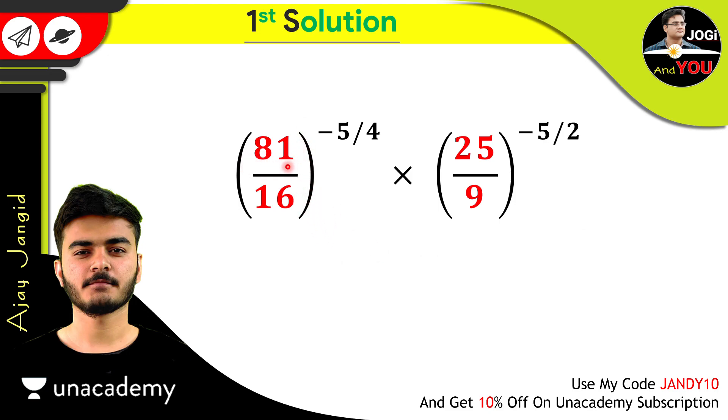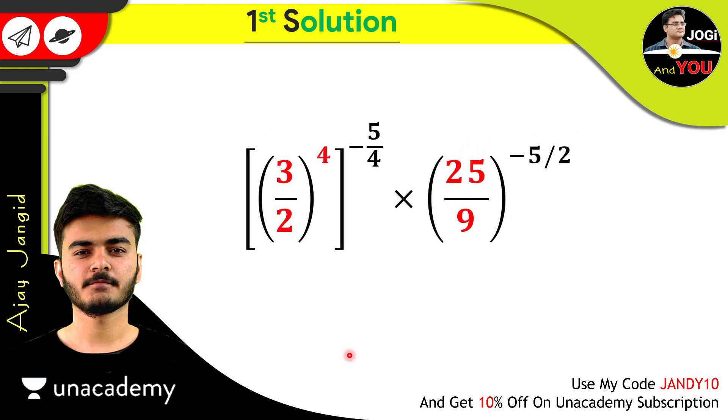The 81 is the power of 3 to the 4. And the 16 is the power of 2 to the 4. So let's convert these into the powers. 3 power 4 is our 81. And 2 power 4 is our 16. And now, 25 upon 9. Convert this also into the power. Just like 25 is 5 square. And 9 is 3 square. So convert this just like this.